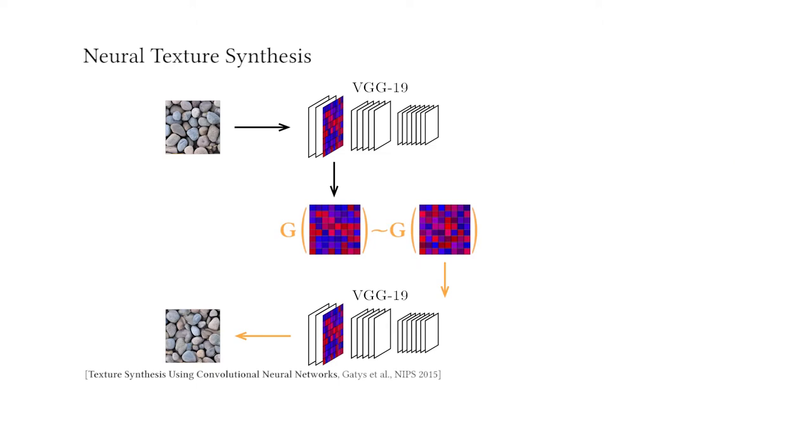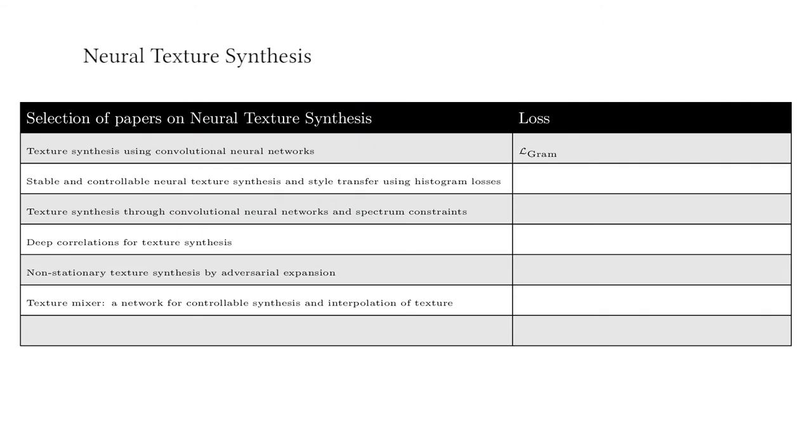Several papers document this and compensate by combining gram with additional loss functions, or even switch paradigm towards elaborated generative architectures like GANs. This complexifies the process by requiring tedious metaparameter tuning and hindering convergence.